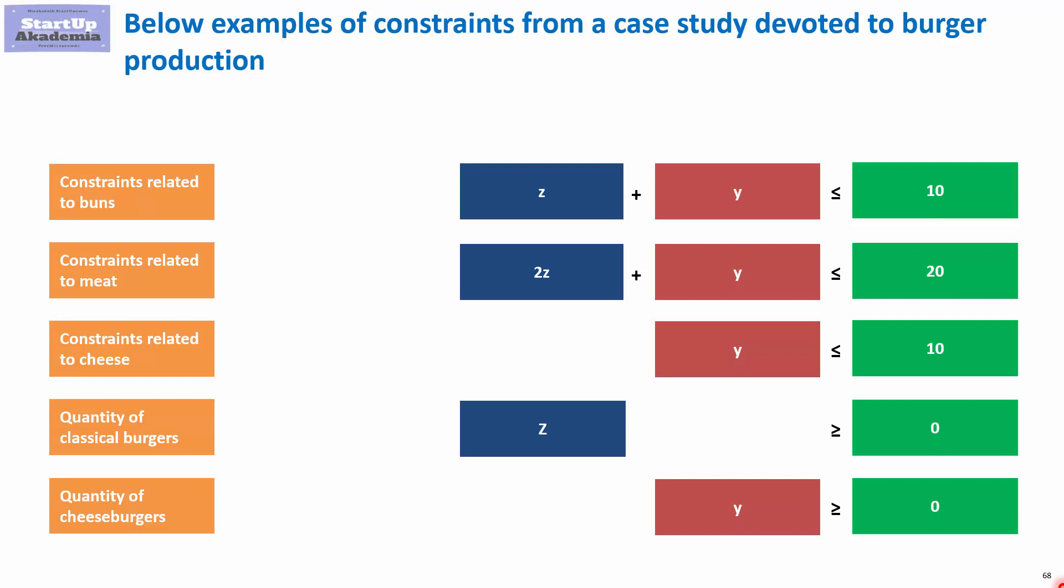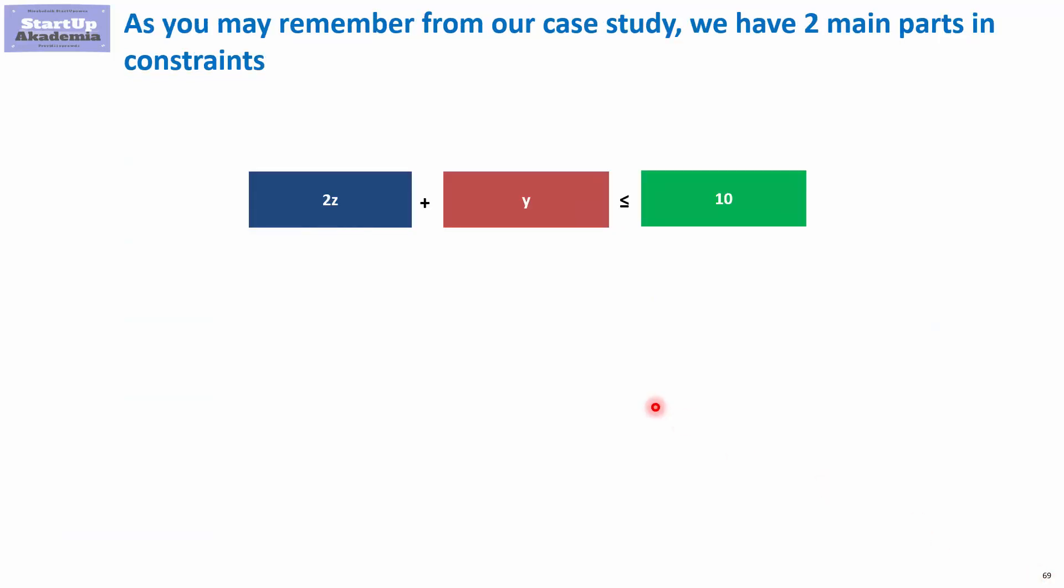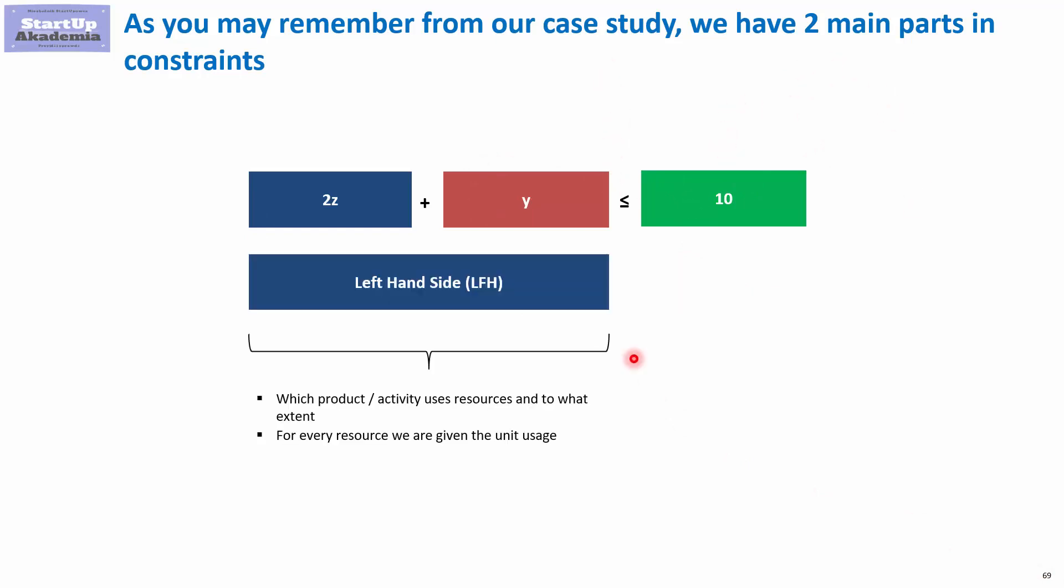As you can notice, in a typical constraint we have two sides—the left one and the right one—and there is a sign between them. We will quite often use this name in our discussion. The things on the left we call the left-hand side, and it describes to what extent a certain product or activity is used by a certain variable.